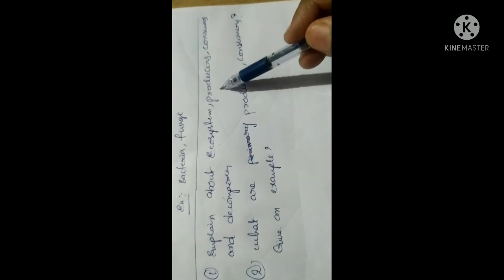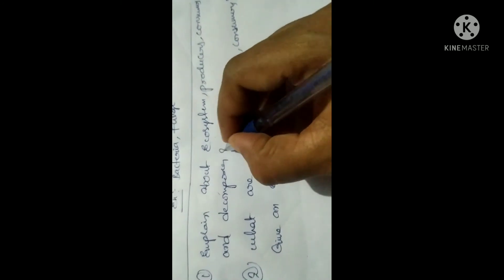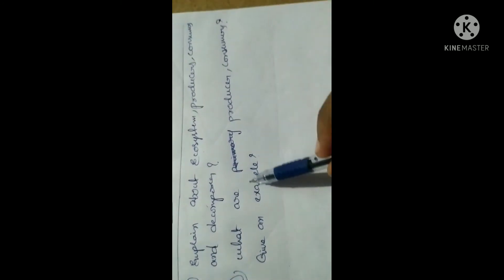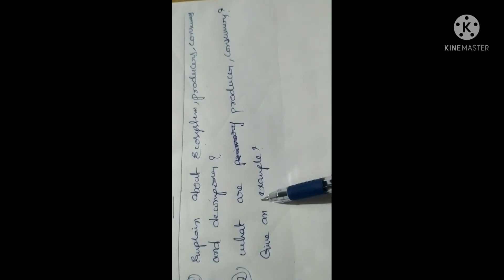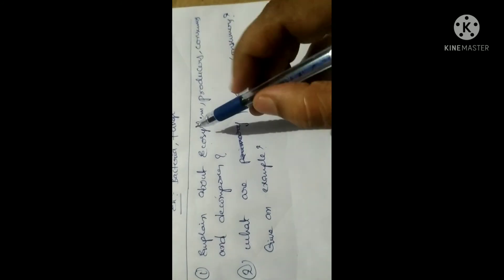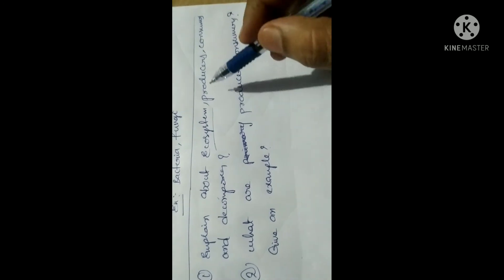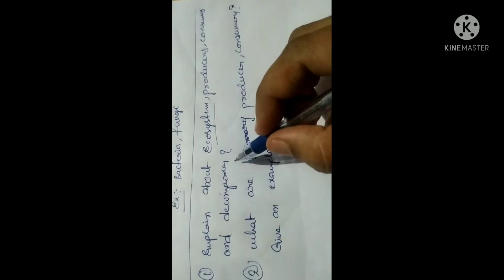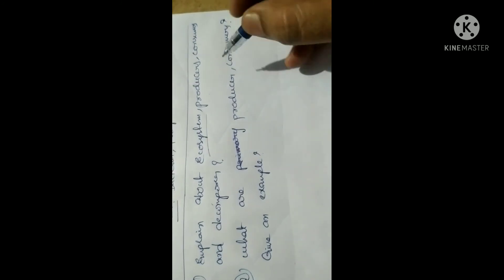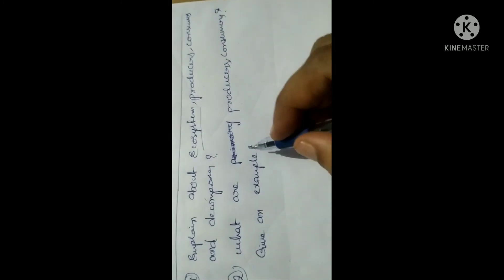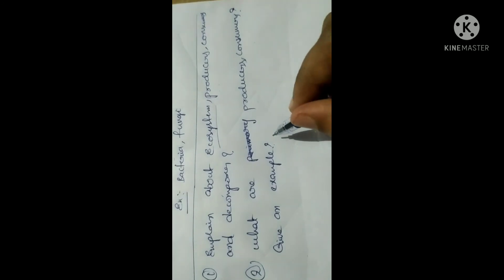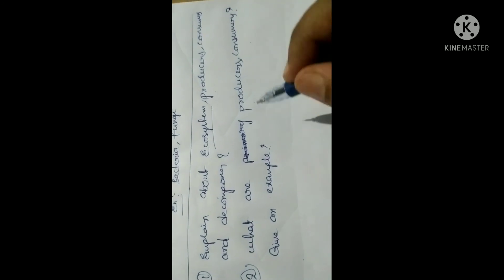From this topic, questions are likely to come such as: explain about the ecosystem, producers, consumers, and decomposers. Another question is: what are the producers and consumers — give examples? The ecosystem is biotic and abiotic components. This is a very, very important three-mark question.